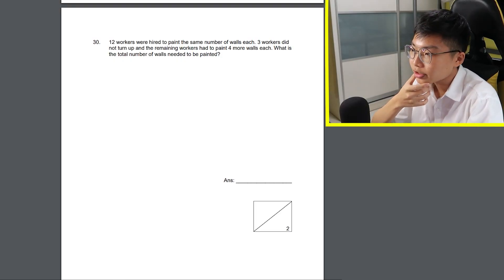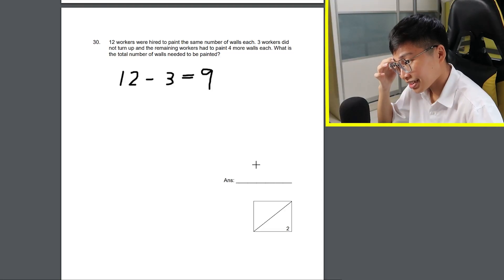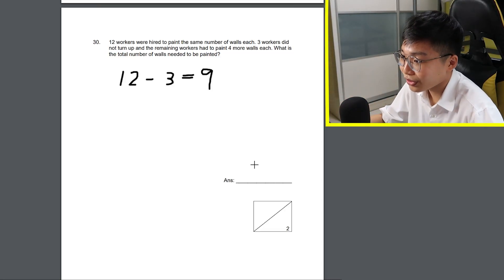12 workers were hired to paint the same number of walls each. 3 workers did not turn up and the remaining workers had to paint 4 more walls each. What is the number of walls needed to be painted? Okay, let me process this question first. 12 workers were hired but 3 did not show up. So let's left with 9. Then the remaining workers have to paint 4 more walls each. I remember there's a way to solve this but I just can't remember it now. Oh, I'm gonna go for odd. 21.